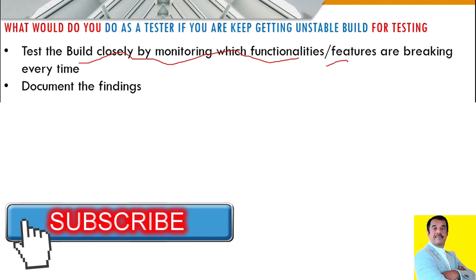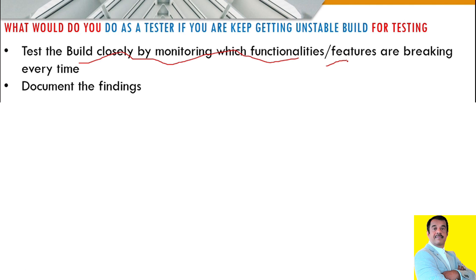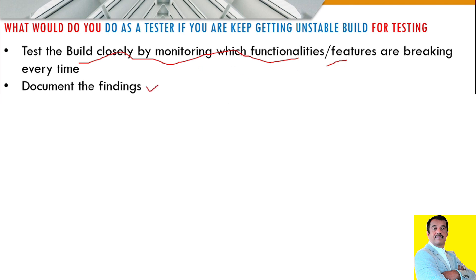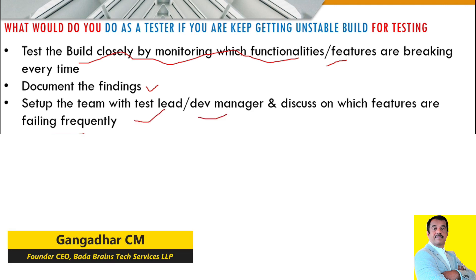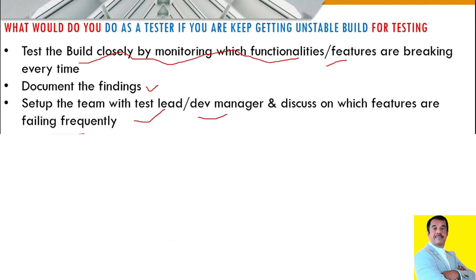The second thing is to document whatever findings you have made across those functionalities or features which are failing more frequently in every build, because of which the build is getting unstable. Once you document all your findings, set up a meeting with your test lead or dev manager and discuss what challenges you are facing, especially in terms of frequently failing test cases in certain areas or features.